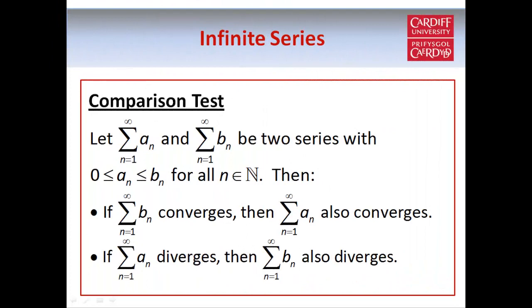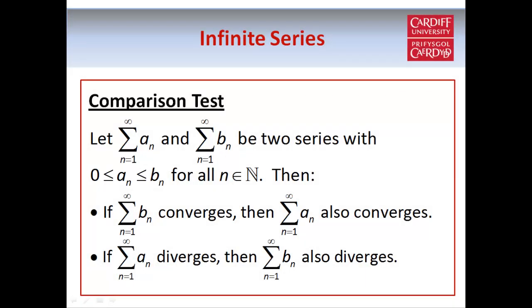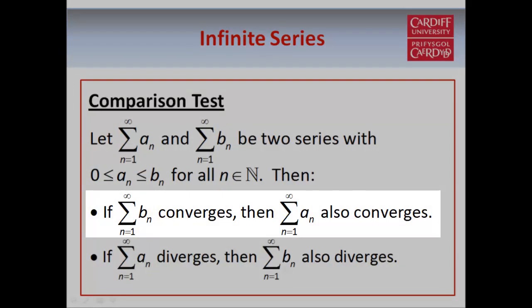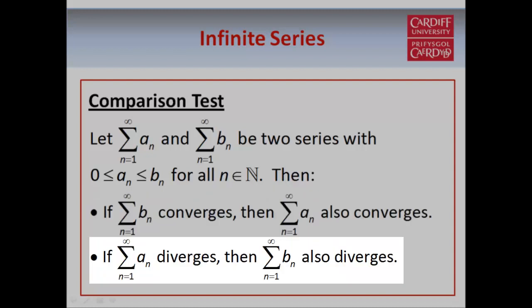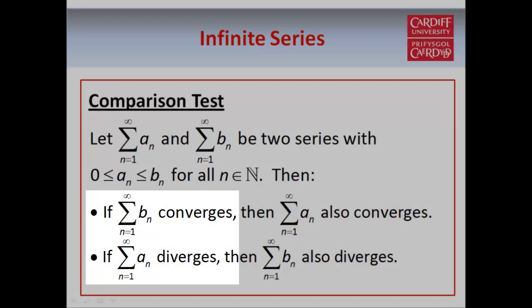We're going to start with the comparison test. Suppose we have two series, an a_n series and a b_n series, such that this inequality holds: a_n is less than or equal to b_n for all natural numbers n, and importantly, the a_n and b_n terms have to be non-negative as well. The idea of this test is we use it when one of our two series is known to converge or diverge. If the b_n series converges, that means we can say that the a_n series converges as well, and if the a_n series diverges, then we can say the b_n series diverges as well. So you have to be careful to use it the right way round, and you have to be in one of these two situations.